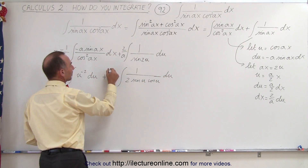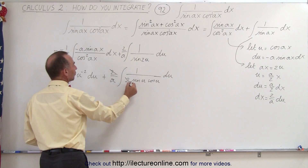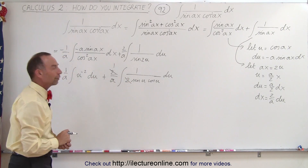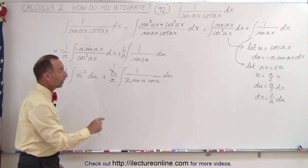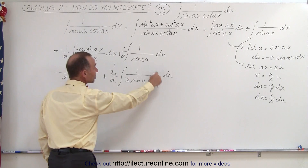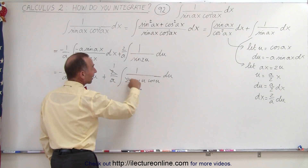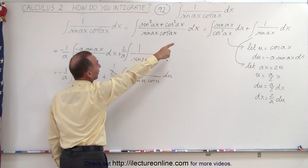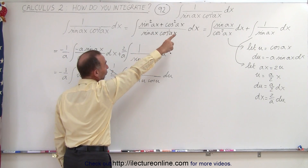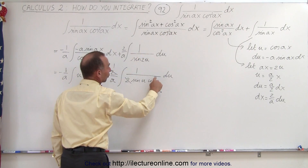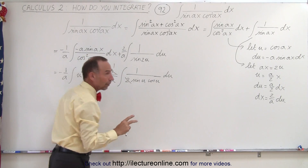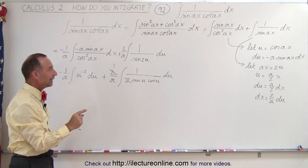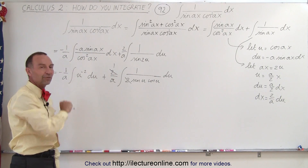Then we realize that the 2 and the 2 cancel out, and we get 1 over A. Notice this is in the exact same form as the previous expression, except instead of cosine squared we have cosine to the first power — which looks just like what we did in the previous video. So we're able now to easily integrate this.